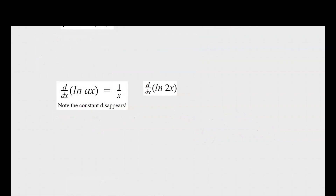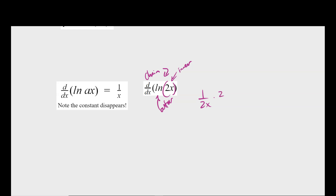If you take the derivative of the natural log of something, you end up with the inverse of that, and any constant disappears — and now we can explain why using the chain rule. Think of 2x as the inner function and ln as the outer function. The derivative of the natural log gives 1 over 2x, times the derivative of the inner function, which is 2. That 2 cancels, the constant disappears, and you end up with 1 over x. That's why the constant disappears.